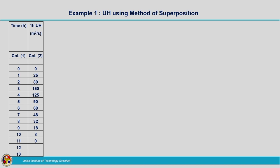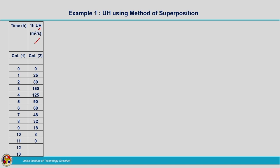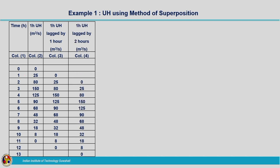These are the data given to us. The ordinates represent the 1-hour unit hydrograph in cubic meters per second. Now what we will do is lag these ordinates of the 1-hour unit hydrograph by 1 hour. We will be lagging it by 1 row, starting from the first hour. For the 3-hour unit hydrograph we need to lag it again by 1 hour, giving us the ordinates of the 1-hour unit hydrograph lagged by 2 hours, starting at 2 hours.